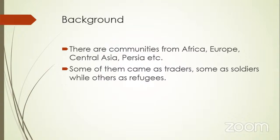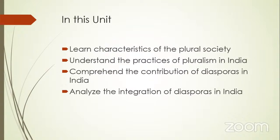A lot of people do not know, but Parsis are people who came from Persia. Some of them came as traders, some came as soldiers, while others came as refugees. And the same way Indians traveled across the world - some as soldiers, some as indentured laborers, some as slaves. Currently, we are still migrating as technical resources, going for jobs. It's all migration. So what do we do in this unit? We learn characteristics of a plural society, understand practices of pluralism, comprehend the contribution of diasporas, and analyze the integration of diasporas in India when we are talking about the plural society.